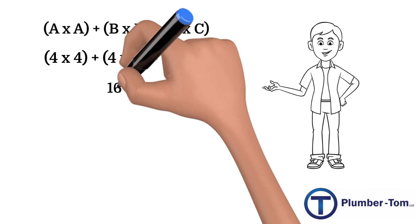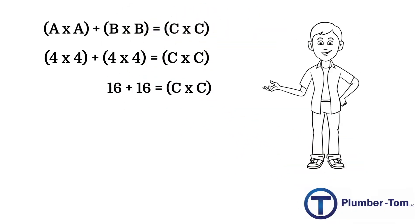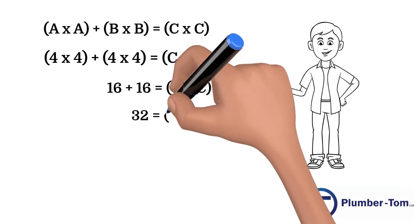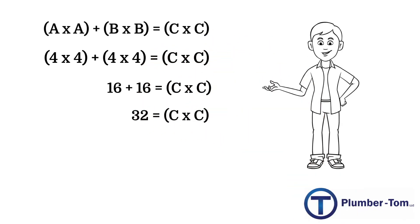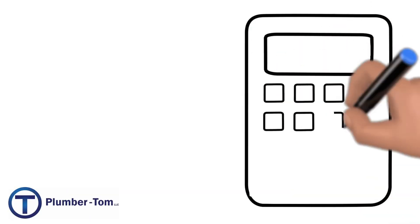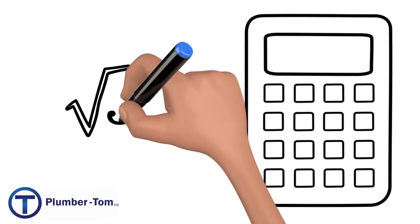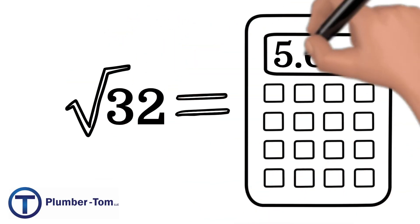4 times 4 is 16, so we have 16 plus 16 equals c times c. 16 plus 16 is 32, so we have 32 equals c times c. We will then take the square root of both sides of the equation, and to solve for c, we will take the square root of 32, which equals 5.657.